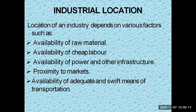Thirdly, availability of power and other infrastructure is another prerequisite. Wherever a manufacturing industry is located, power and other infrastructure — such as land, labor, and machinery — should be easily available. Fourthly, proximity to markets is important: markets for selling finished goods, for procuring raw materials, or for accessing other services like banking, insurance, and other facilities. Proximity to the market is therefore a very important factor.